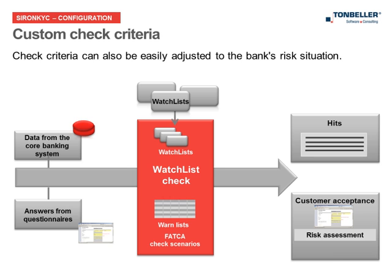Apart from matching with watchlists, custom check rules — so-called business rules — enable a differentiated individual check strategy. The quality of the check results can be improved sustainably, and the number of false positives and, hence, manual expenditure can be drastically reduced.